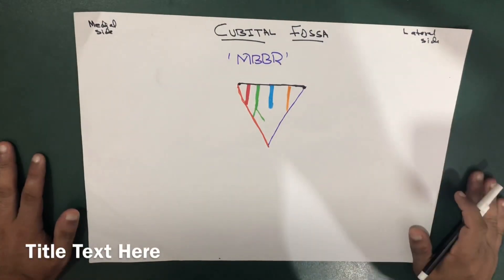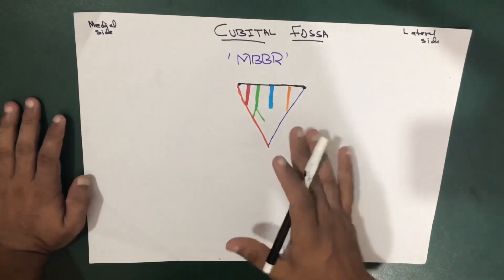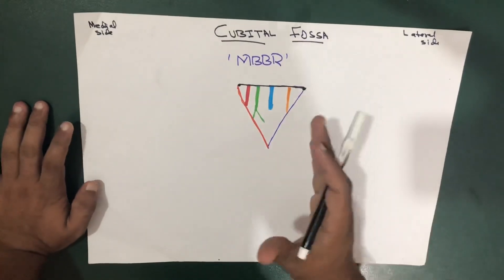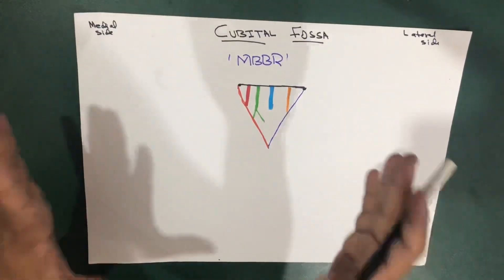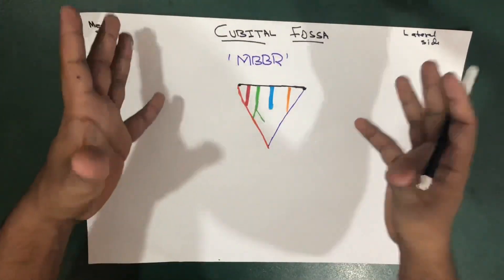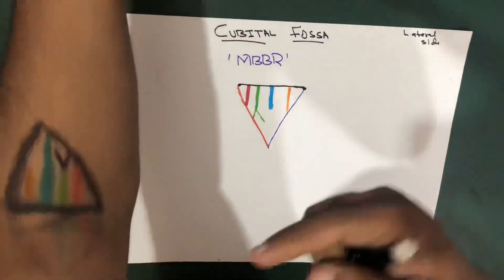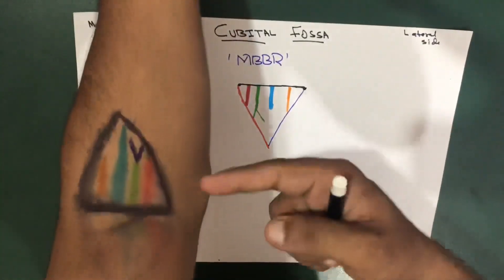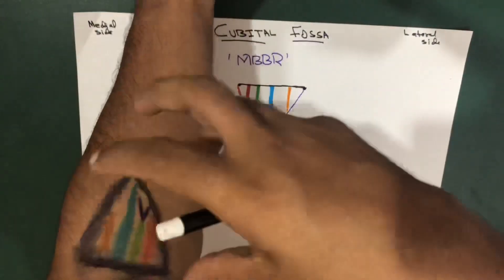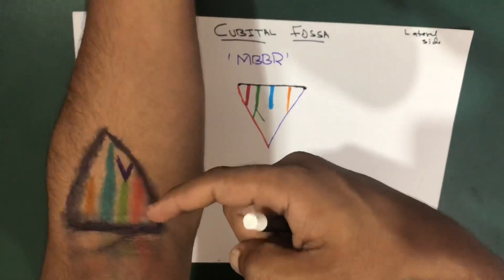Hello YouTube, this is Sam. In this session we're going to talk about the cubital fossa. The cubital fossa is a triangular depression area in front of the elbow — you can see this triangular depression right here.